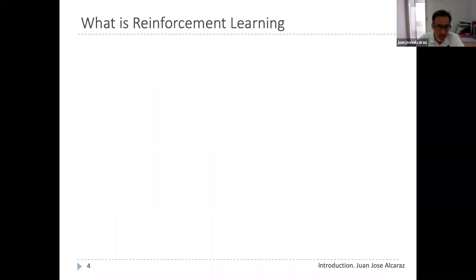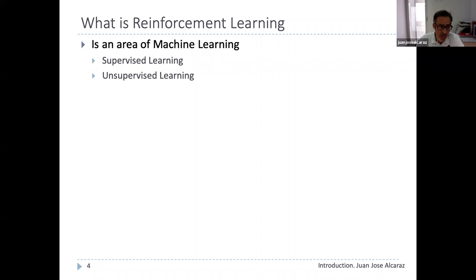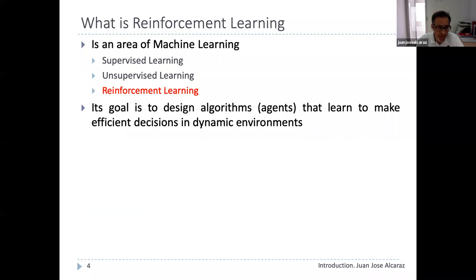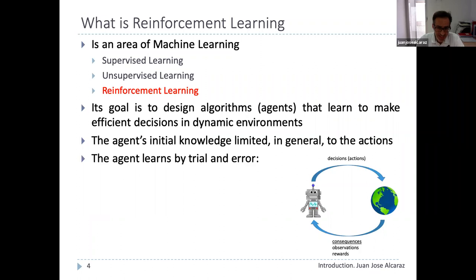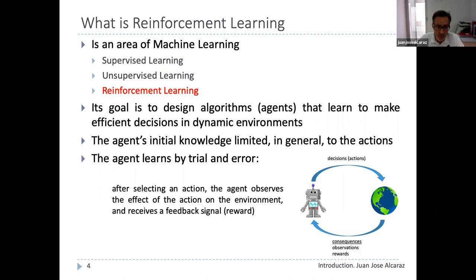What is RL? It is an area of machine learning. There are three main areas of machine learning: supervised learning, unsupervised learning, and reinforcement learning. The goal of RL is to design algorithms that learn to make the best possible decisions in dynamic environments. These algorithms are called agents. The initial knowledge of the agent is limited to the actions that can be selected at each decision step. A key feature of RL is that the agent learns by trial and error — it selects an action and observes the consequences, particularly the state of the environment.